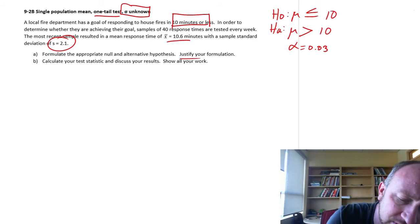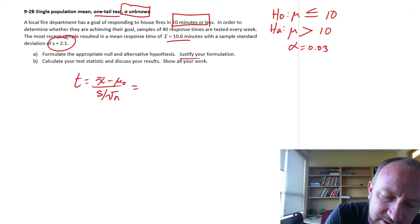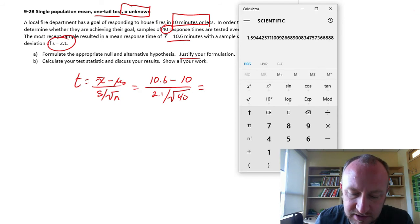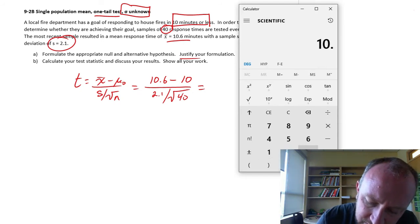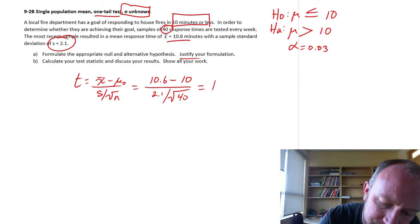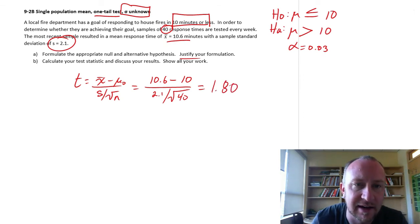So that's all set up. Now let's perform the rest of the test. So let's start with our test statistic. X bar minus mu over s root n. So our sample mean is 10.6. Our hypothesized value is 10. Standard deviation is 2.1. Sample size was 40. Now let's just push some buttons. 10.6 minus 10, divided by 2.1 over root 40. 1.8. 1.8 is our test statistic.